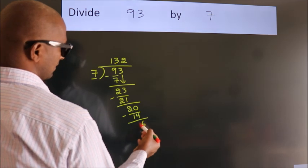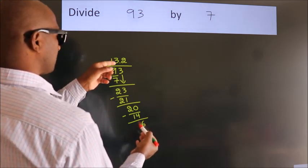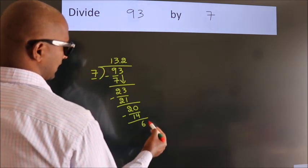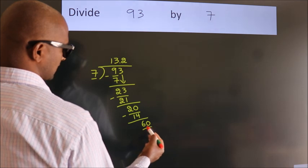After this, we already have the decimal. So, directly take 0. So, 60.